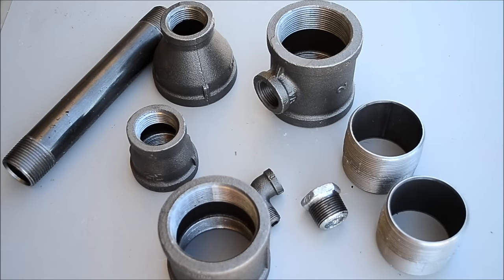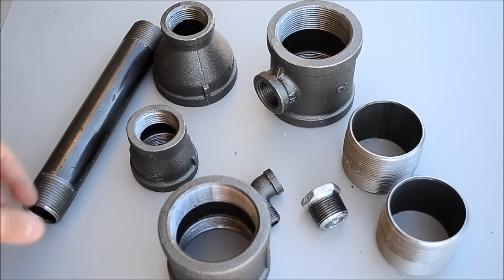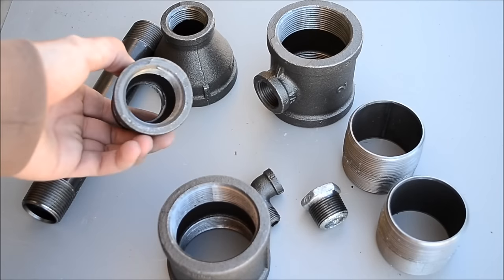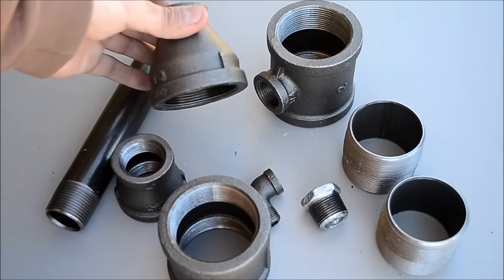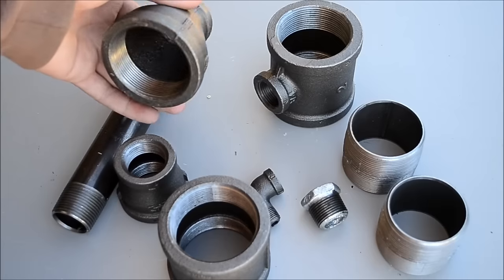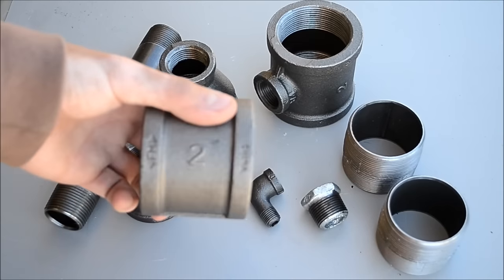For this project we're going to need a 1 inch by 8 inch piece of black iron pipe, a 1 inch to 1 quarter inch reducer, a 1 inch to 2 inch reducer, and a 2 inch coupler.